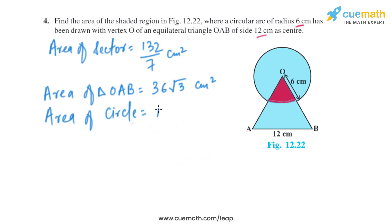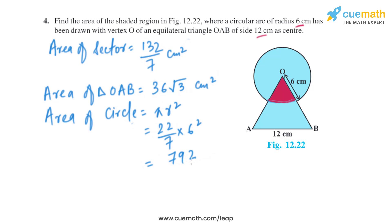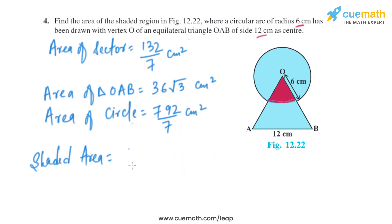Now let's find the area of the circle. The formula is pi R squared, which is 22 divided by 7 multiplied by 6 squared. On solving, we get the area of the circle as 792 divided by 7 square centimeters.